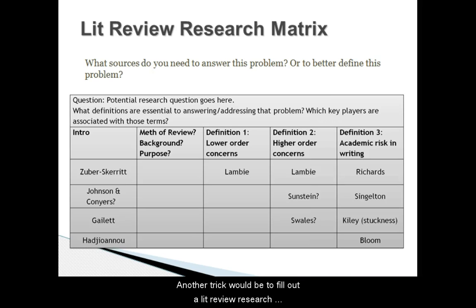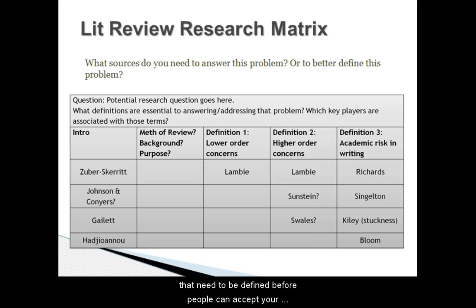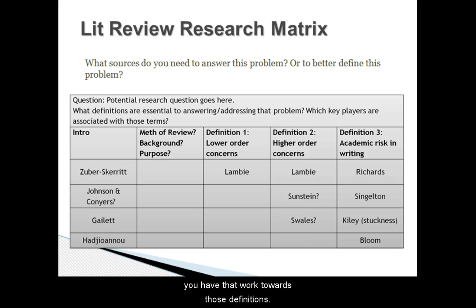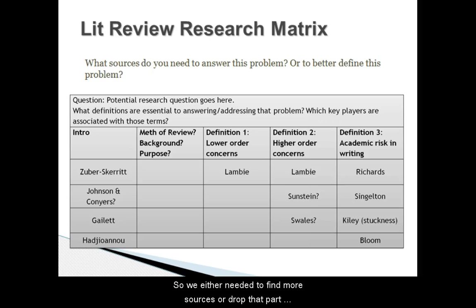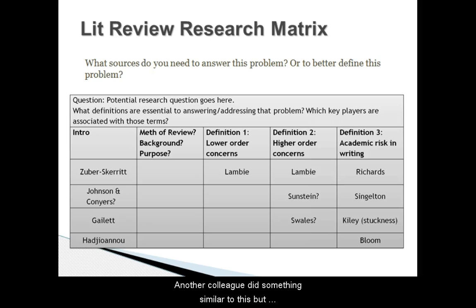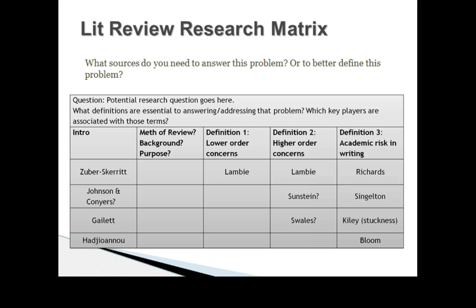Another trick is to fill out a lit review research matrix. Once you know what you're researching, you can define a few things that need to be established before people can accept your research question, then list the sources you have that work towards those definitions. In this example, we were researching graduate student writing issues and found we didn't have enough sources to back up the claim that graduate students have lower-order writing concerns like grammar, punctuation, and citations — so we either needed to find more sources or drop that part of our research. We found more, by the way. A colleague also built something similar in Excel and was able to sort columns to see which sources addressed which issues.